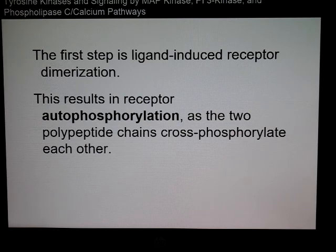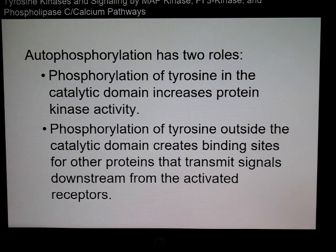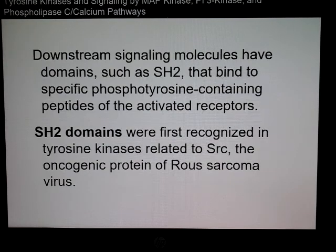The receptor itself will autophosphorylate because it has two polypeptide chains that cross each other and phosphorylate each other. There are two roles for this: phosphorylation of the tyrosine in the catalytic domain, which increases the activity of the kinase, and phosphorylation of tyrosine outside the catalytic domain, which creates binding sites for other proteins to bind to and become activated.